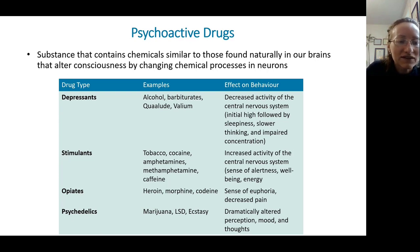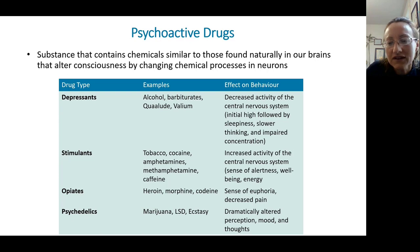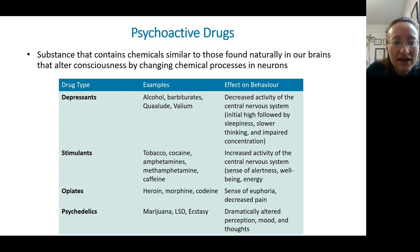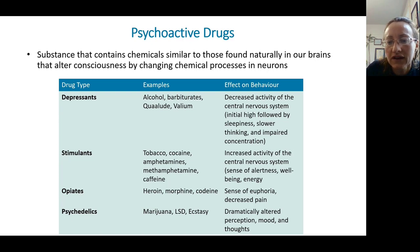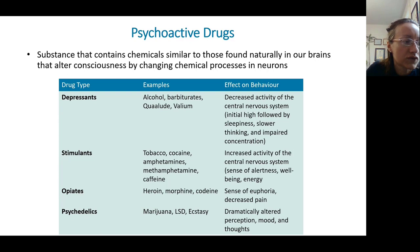Psychoactive drugs are chemical substances that are similar to the chemicals found in our brain that regulate consciousness and perception. Taking those drugs changes the normal chemical processes in neurons, often by affecting the neurotransmission process, and that makes us feel differently — maybe more relaxed, maybe more alert, or it might make us perceive things that aren't really there.